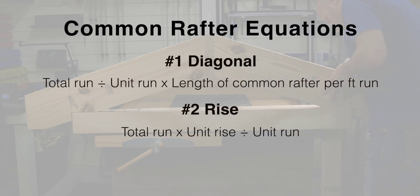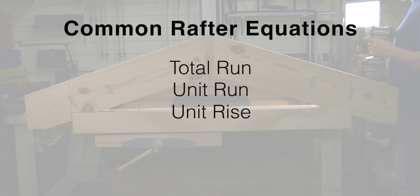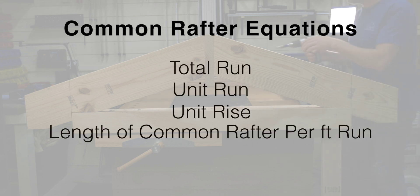In order to use these two equations, you need to know four things: total run, unit run, unit rise, and length of common rafter per foot of run.